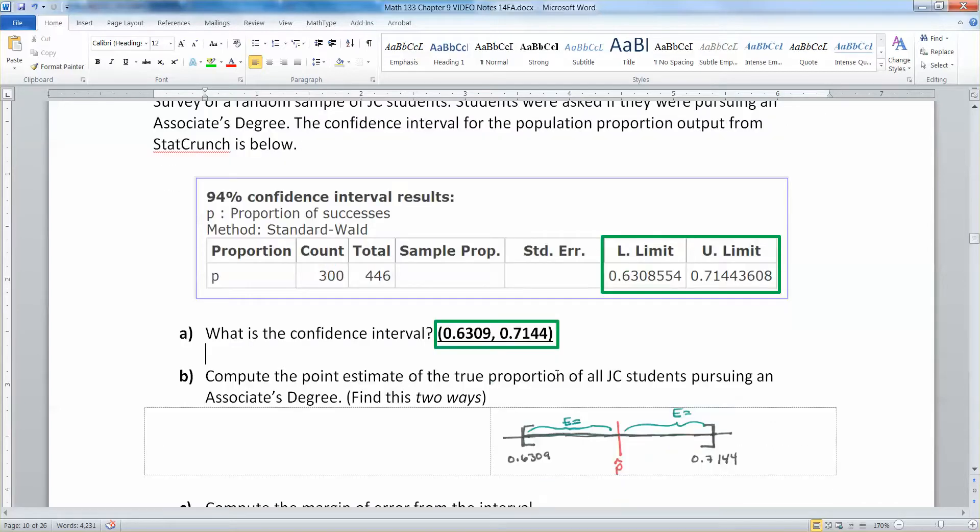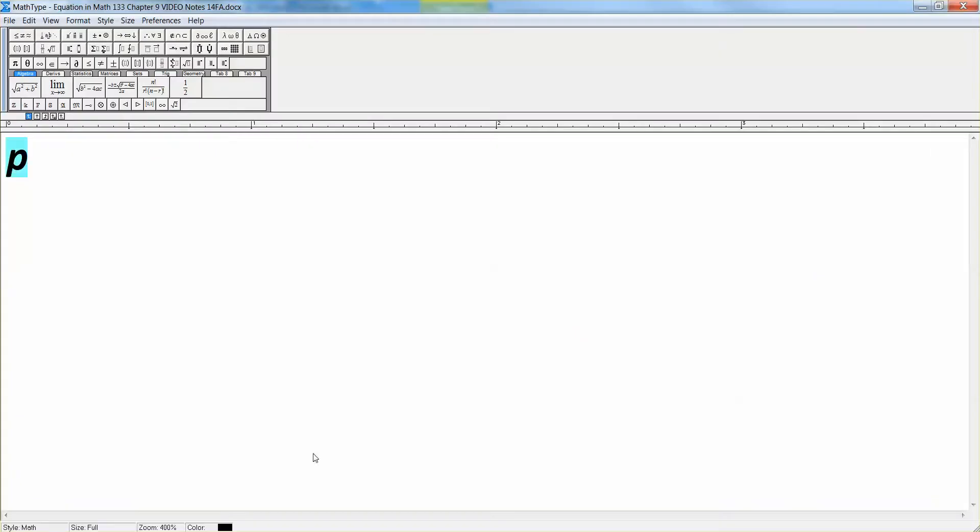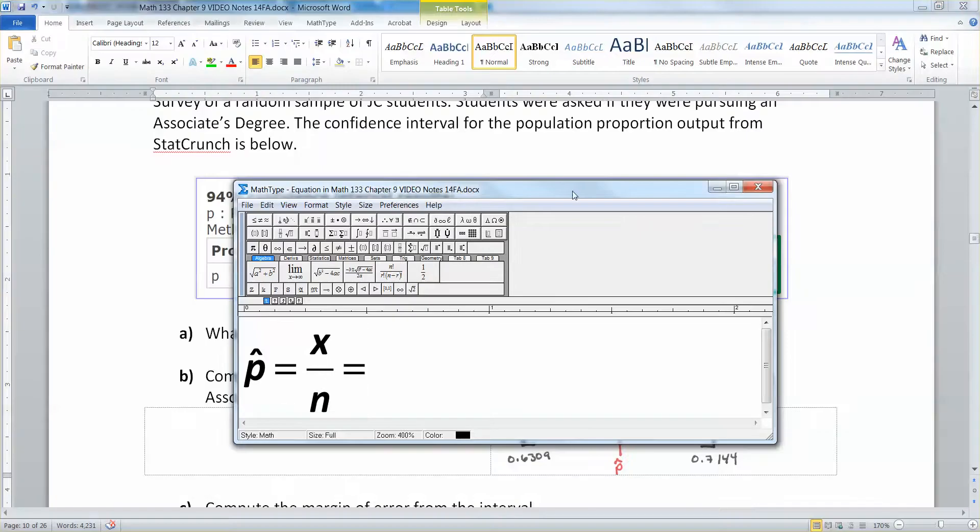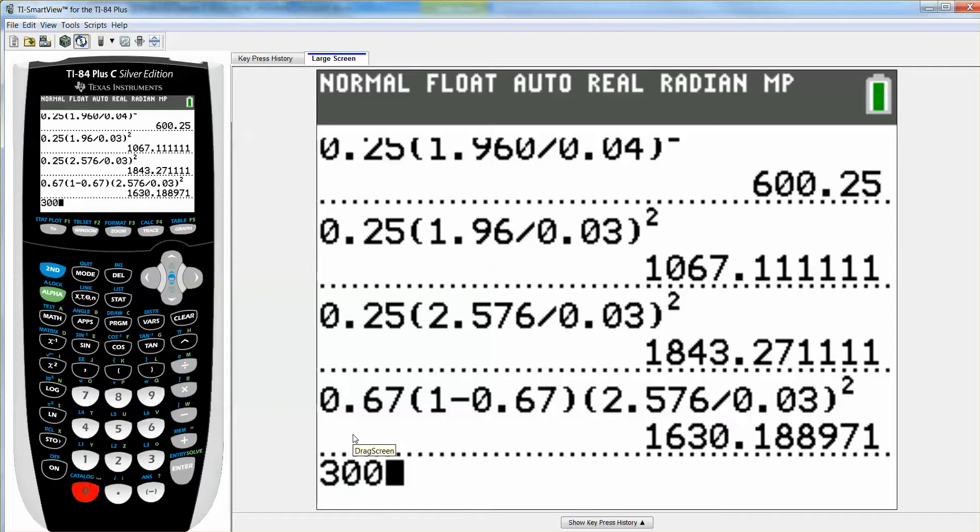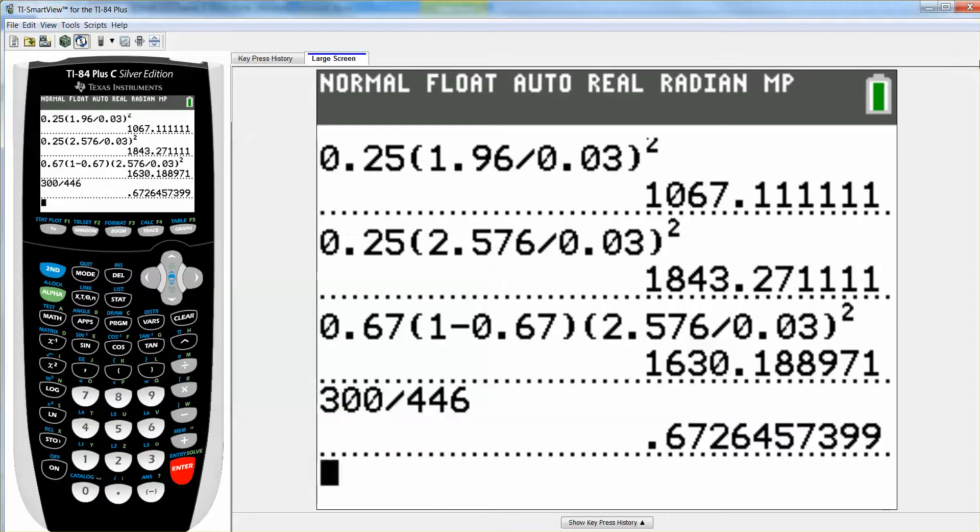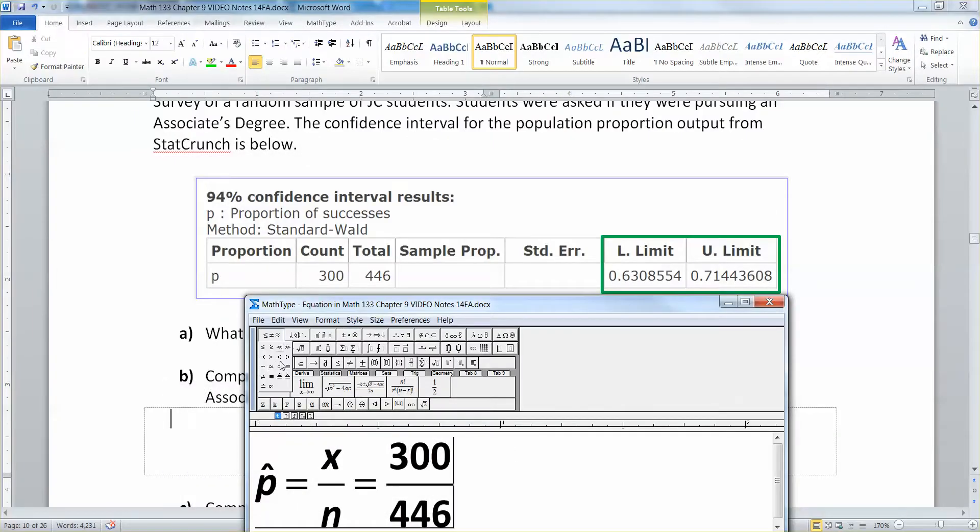We want to compute the point estimate of the true proportion of all JC students pursuing an associate's degree. If you recall, the point estimate for a confidence interval for proportions is p-hat, which is X over N. X was 300, and N was 446. That would give us a sample proportion of 300 divided by 446, about 0.6726.